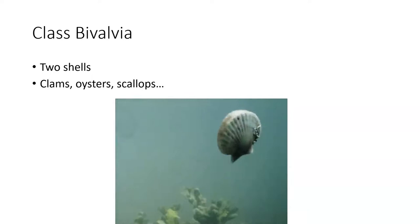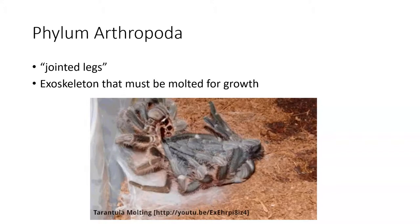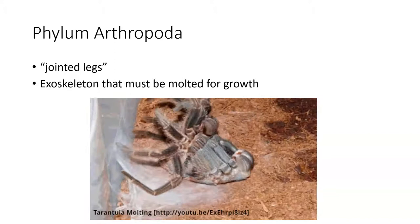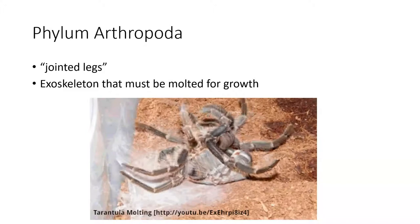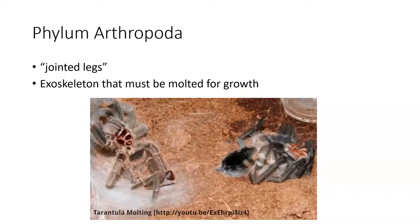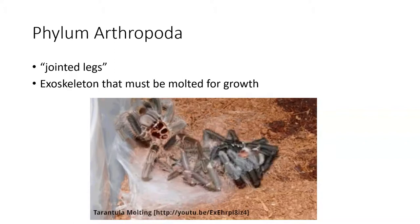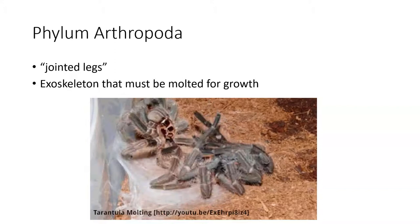Phylum Arthropoda means 'jointed feet' or jointed legs — that is the hallmark characteristic of this group. A common mispronunciation is 'amphropoda,' which would mean 'man foot,' which is wrong. Another unique feature is the exoskeleton. Having an exoskeleton limits growth, so if you want to grow you have to shed the old skeleton and regrow a completely new one. This tarantula on screen is in the process of molting its exoskeleton.